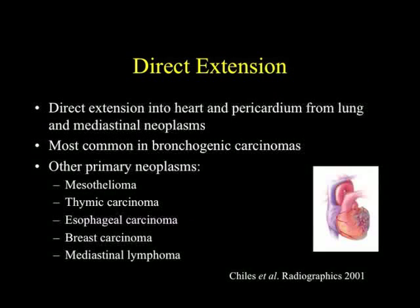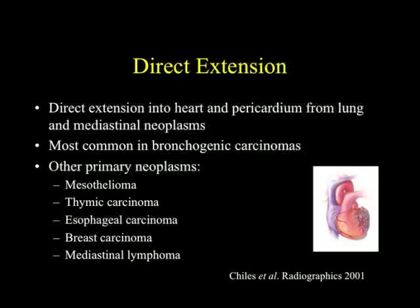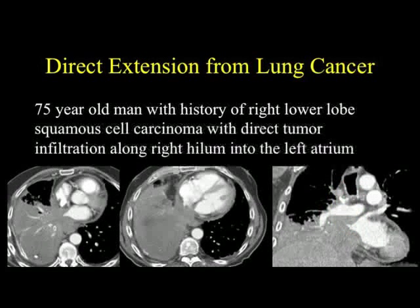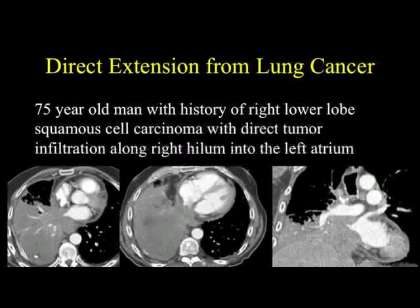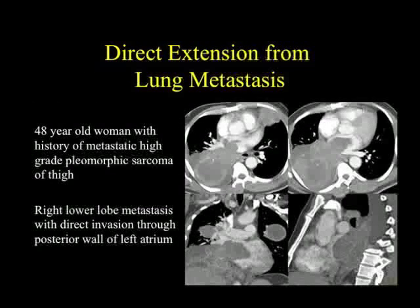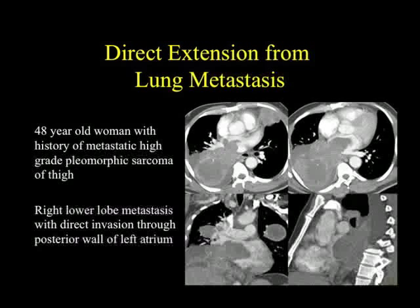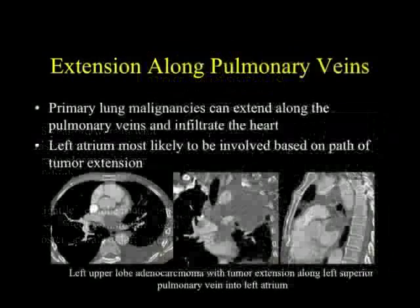When we speak about direct extension, it can occur from lung cancer or other mediastinal neoplasms. It's most common in bronchogenic carcinoma but can occur in mesothelioma, thymic carcinoma, esophageal cancer, breast cancer, and lymphoma. Here's a nice example of a patient with lung cancer showing infiltration along the right hilum — essentially hepatization of the lung — now growing into the heart and involving the left atrium. Here's a patient with metastatic sarcoma of the thigh showing direct invasion through the posterior wall and very extensive lung metastasis.